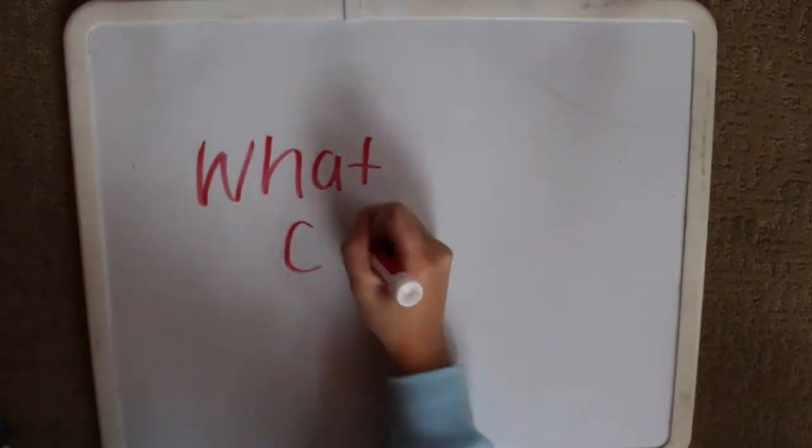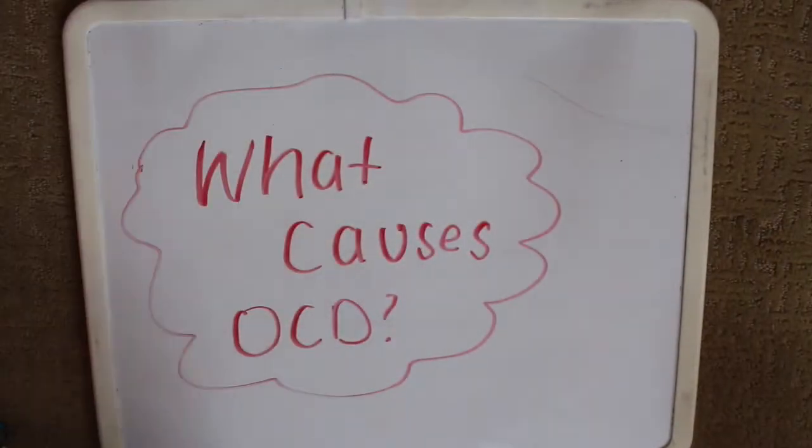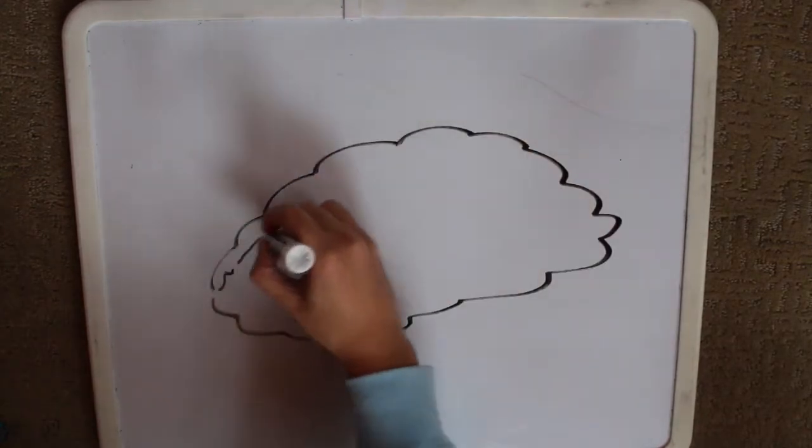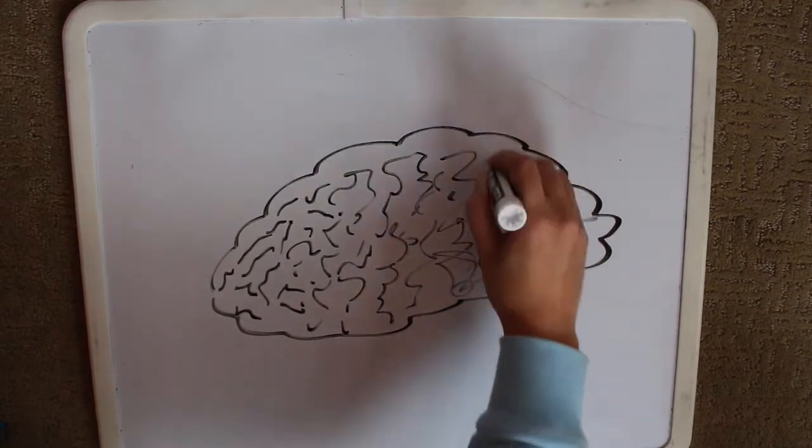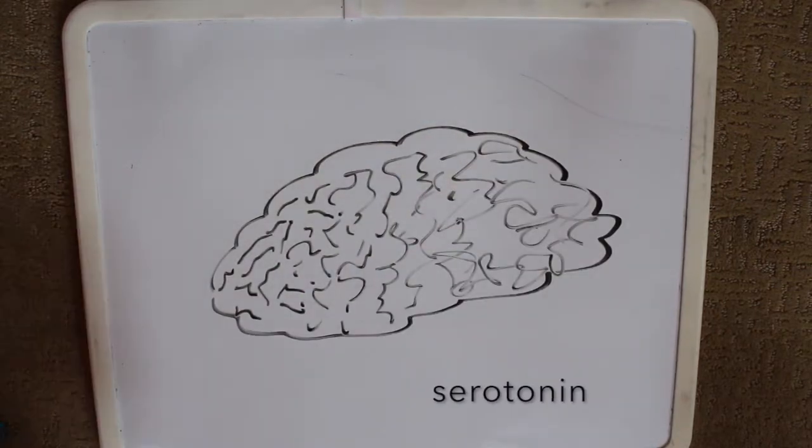At this point, it is critical to look at what causes these obsessions and compulsions. OCD involves problems in communication between the front part of the brain and deeper structures of the brain. These brain structures use a neurotransmitter called serotonin.